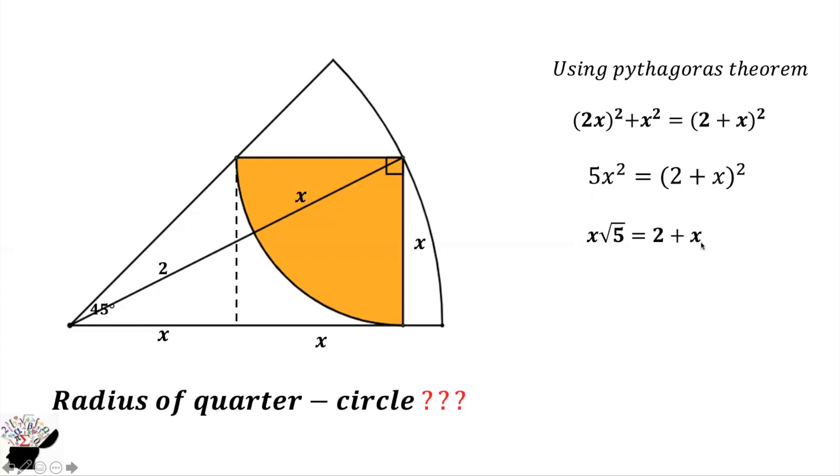So x√5 minus x equals 2. From here we get x equals 2 divided by √5 minus 1.